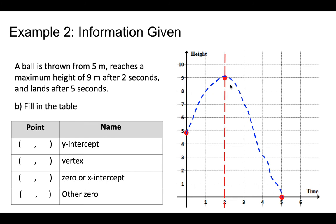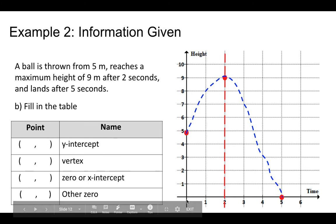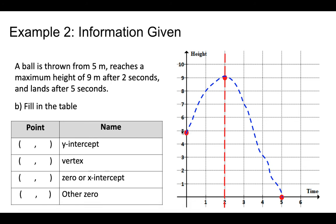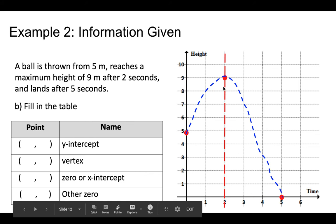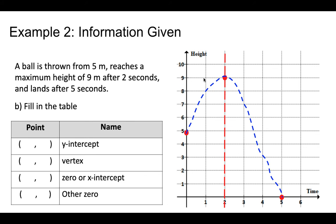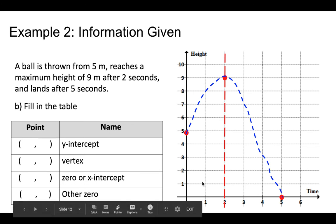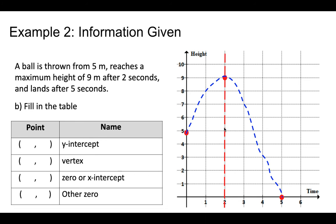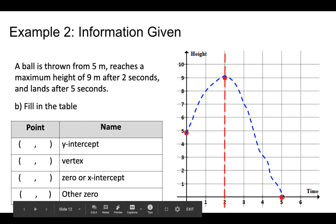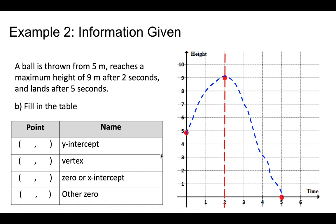Next, fill in the table. The y-intercept is where it crosses the y-axis — that's (0, 5). The vertex x is the maximum or minimum value, so x is 2 and y is 9. The zero where it crosses the x-axis is (5, 0). The other zero is symmetrical across the axis of symmetry. This zero is three units to the right of the axis of symmetry, so the other zero is three units to the left — that would be (−1, 0).